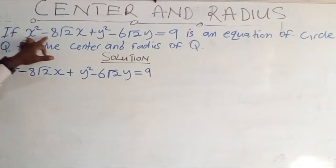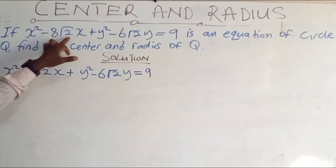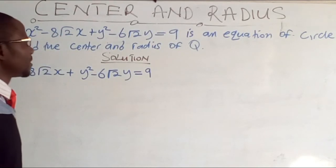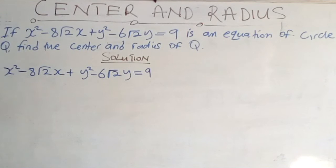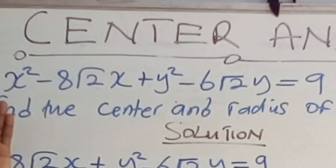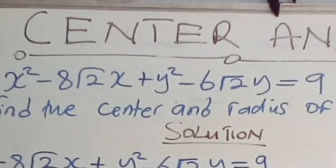If x² − 8√2·x + y² − 6√2·y = 9 is an equation of circle Q, find the center and radius of Q. In this case, coefficients cannot be reduced any further.